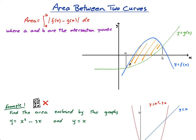Even if you mess up and do g of x minus f of x, you'll actually get the same answer — it'll just be negative, and then you can just make it positive because the area has to be positive, and you actually still get full marks. I'm going to do three things in this lesson: first, show you why this formula works; second, do an example without a calculator; and finally, do an example with a calculator.